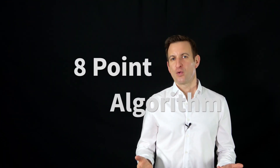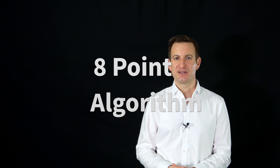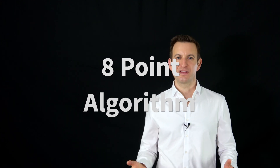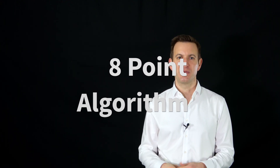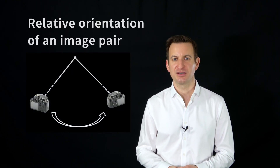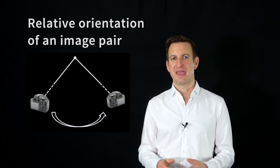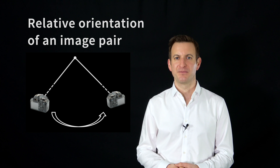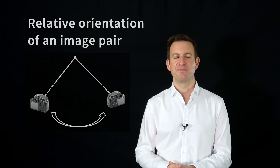Welcome back to another episode of 5 Minutes with Cyril. I want to explain today the core idea of the eight-point algorithm. So what is the eight-point algorithm and what can we do with it? The eight-point algorithm is a technique to compute the so-called relative orientation of a camera pair or an image pair.